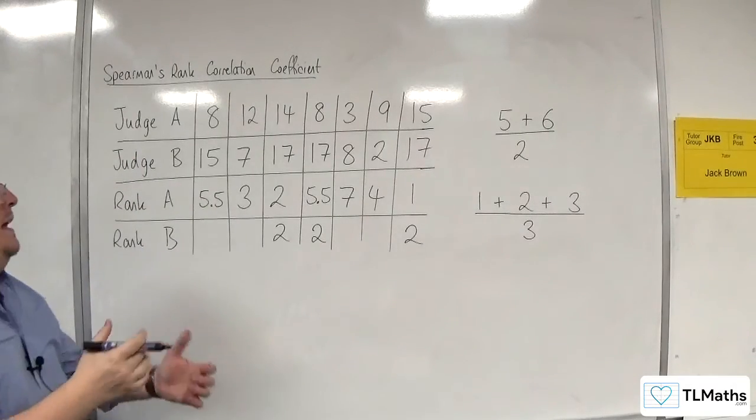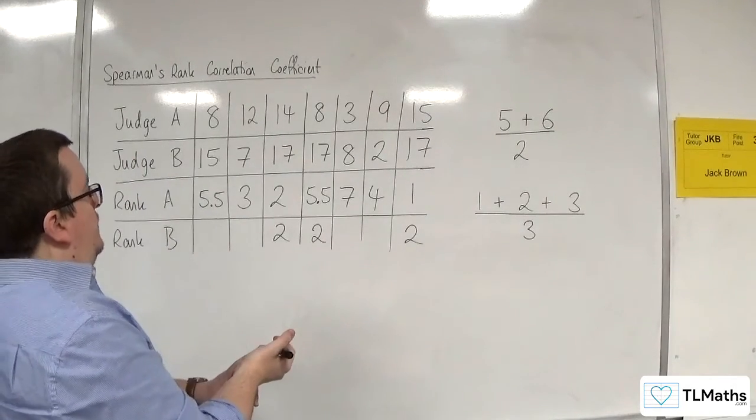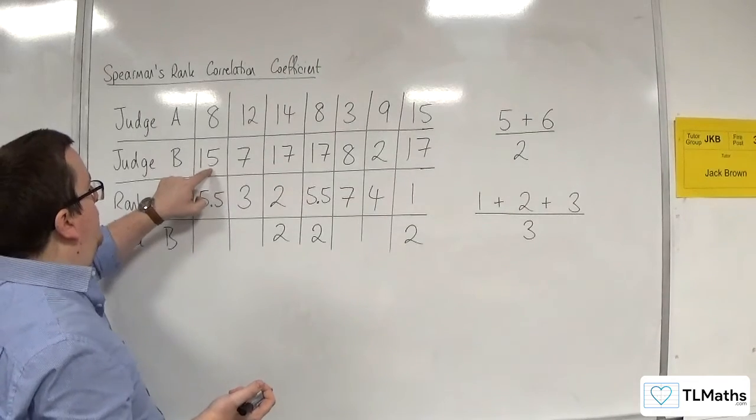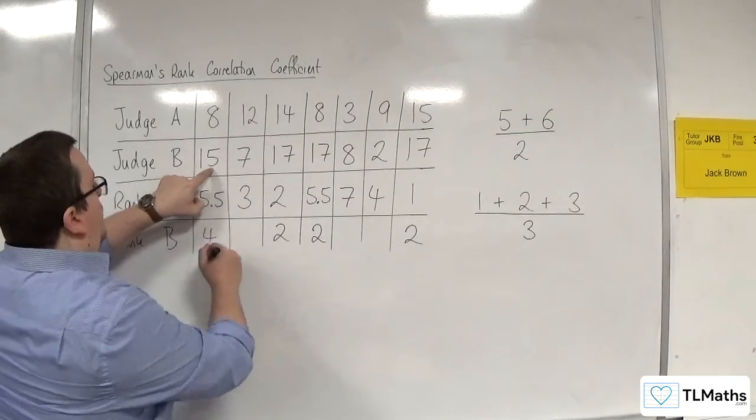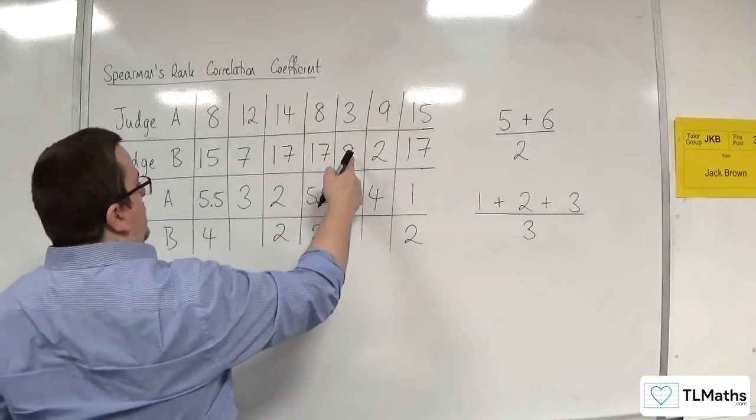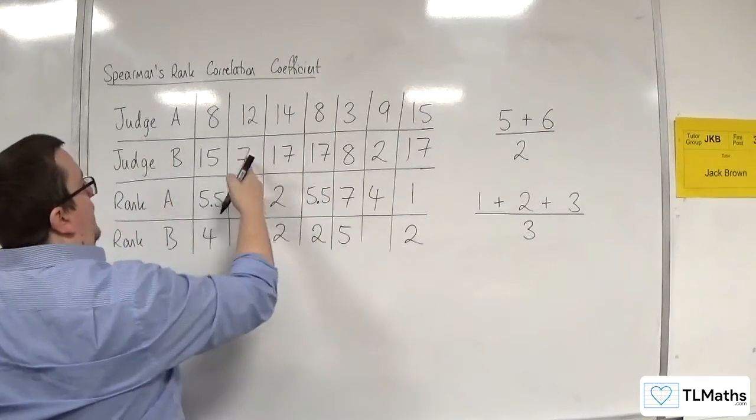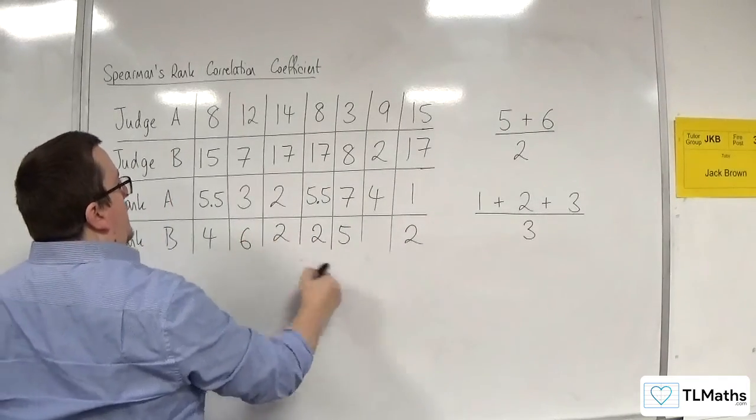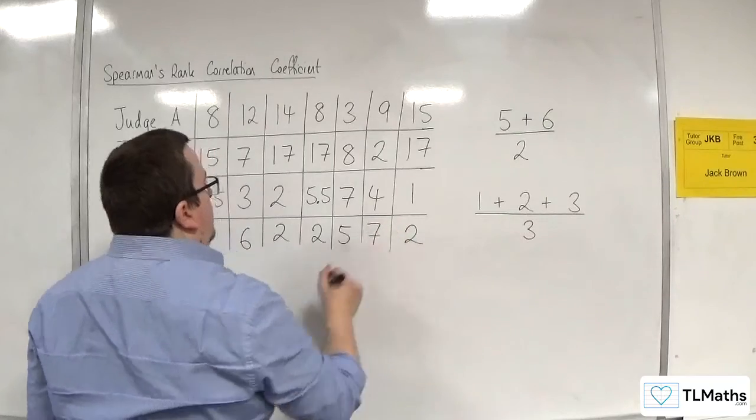So, that counts for 1st, 2nd, and 3rd. So, the 15 here would now get 4th position. Then, we would have the 8 in 5th position, the 7 in 6th position, and then the 2 in 7th position.